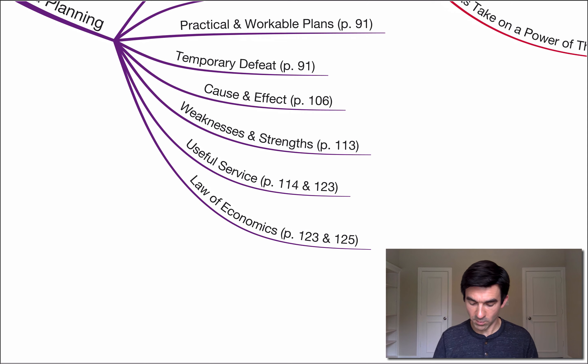I'm going to jump over to page 125 here. He says that the system denies no one this right, but it does not and cannot promise something for nothing because the system itself is irrevocably controlled by the law of economics, which neither recognizes nor tolerates for long, getting without giving. The law of economics was passed by nature. There is no Supreme Court to which violators of this law may appeal.